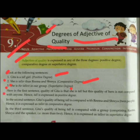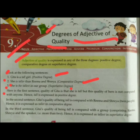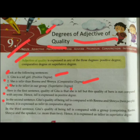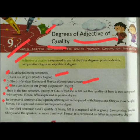In the first sentence, the quality of Gita is that she is tall, but this quality is not compared with anyone. Hence, tall is expressed in positive degree. यहां पर Gita का गुण है कि वो tall है, लेकिन उसकी इस गुण की तुलना किसी से नहीं की जाती। In the second sentence, Gita के लंबे होने के गुण की तुलना रीमा और श्रेया दो लोगों से की जाती है, इसलिए comparative degree में taller के रूप में express किया गया है।